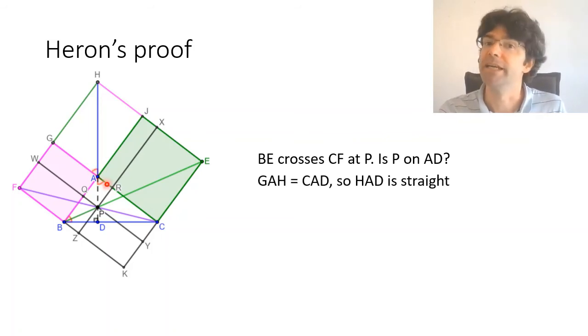They're both a right angle minus angle ACB, and if GAH is equal to DAC then we see that HAD is a straight line. So rather than testing whether P lies on AD what we're going to do instead is test whether A lies on HP - is HAPD all the straight line.